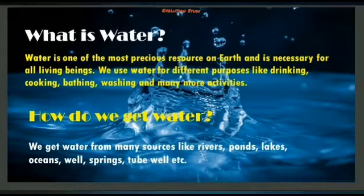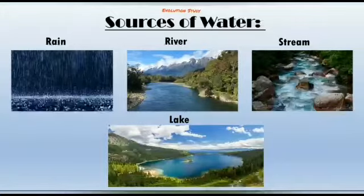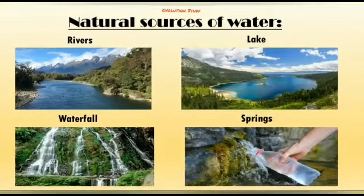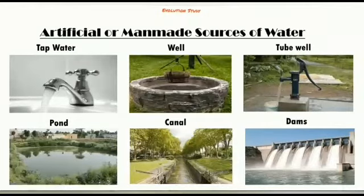We get water from many sources like rivers, ponds, lakes, oceans, wells, and springs. Natural sources of water include rivers, lakes, waterfalls, and springs. The artificial or man-made sources of water are tap water, wells, tube wells, ponds, and dams.